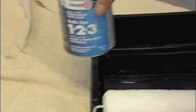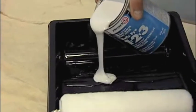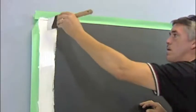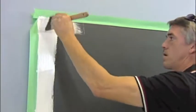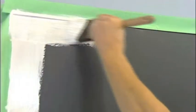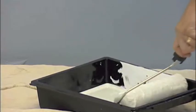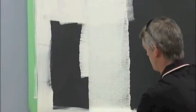Egan Visual recommends primer Bullseye 123 or its equivalent. Primer is applied with a brush to the edges of the chalkboard for greatest coverage and accuracy. Use a standard pile roller to apply primer over the entire surface.